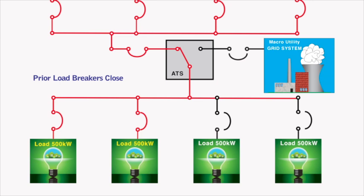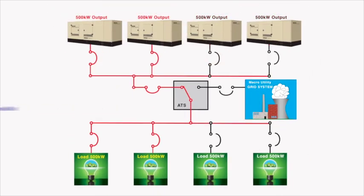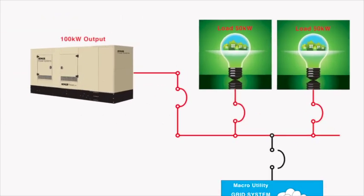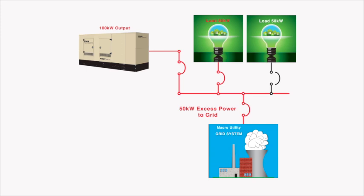When only 50 percent of the load is applied, the breakers of two sets open and they are shut down. In some applications, surplus generator set power is fed back to the grid by paralleling with the utility.